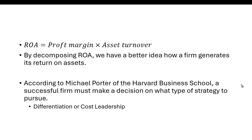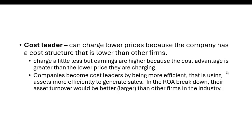By decomposing these, we have a better idea of how this firm generates its return on assets. If you look to Michael Porter of Harvard Business School, an expert in strategy, he says firms have to have a strategy. There are two things they can do: follow a differentiation strategy, or follow a cost leadership strategy. A cost leader can charge lower prices because the company has a cost structure lower than other firms. It costs them less to produce, they share a little with the customer, but they're still more profitable. Cost leaders tend to be more efficient in generating sales or managing inventories, but they also usually accept lower profit margins.